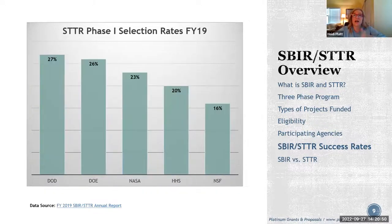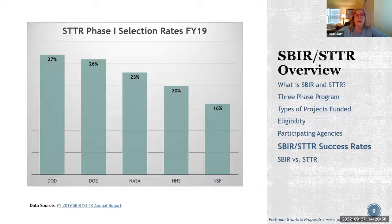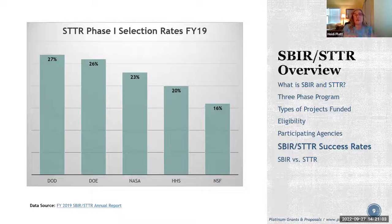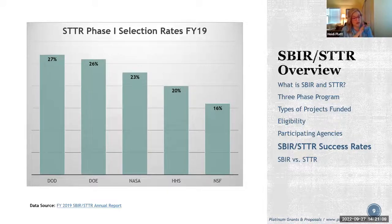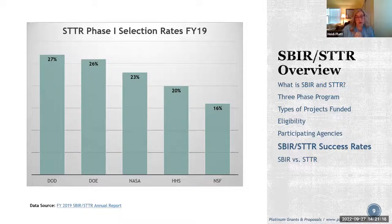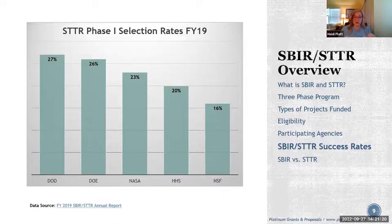For STTR, there are fewer agencies — and we don't have USDA statistics yet since they just started their program. For fiscal year 2019, across all SBIR and STTR programs combined, there were 21,299 proposals submitted, and agencies made 4,002 new Phase 1 awards. That gives you a sense of the volume and competition involved.